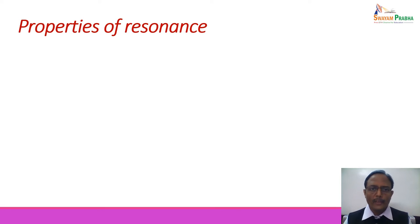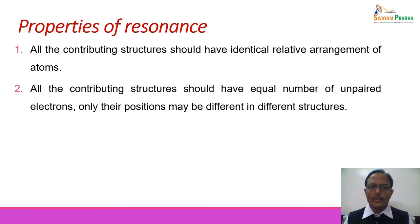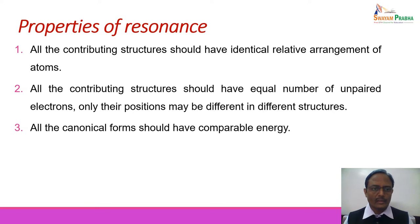Let us see the conditions that must be fulfilled when writing resonating structures. First, all contributing structures must have identical relative arrangement of atoms — atoms must be placed identically with respect to each other. Second, all contributing structures must have equal numbers of unpaired electrons; only their positions may differ. Third, all canonical forms must have comparable energy to contribute to the resonance hybrid — if a canonical form has very high energy, its contribution will be negligible.